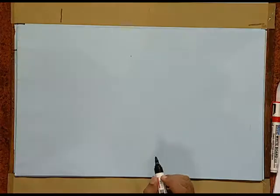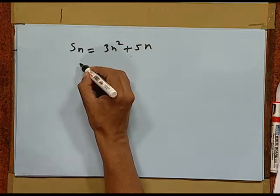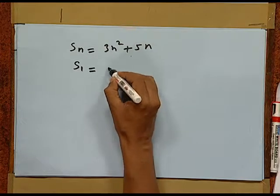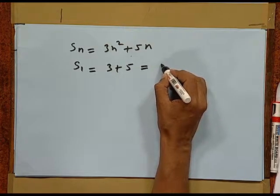Sometimes, the series or sequence are not given directly, but the sum of n terms is given in terms of n. For that, at first sight, neither we know a nor we know d. So, usually we try to find first a and d and then proceed. Here, if you put n equal to 1, you get s1 is equal to 3 plus 5. It is nothing but the first term, that is a.